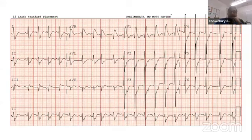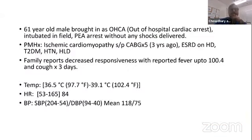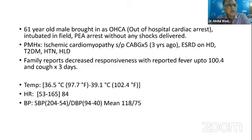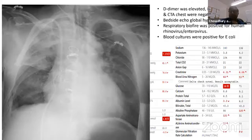It is abnormal, but the clinical context is very important. This is the clinical context: cardiac arrest, PE arrest, and the patient is known to have ischemic cardiomyopathy, CABG, end-stage renal disease — came to us following cardiac arrest. What is the level of potassium? And looking at the acidosis.